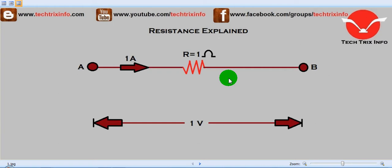...with the atoms or molecules of the substance. This collision creates the resistance and results in the liberation of a minute quantity of heat. The unit of resistance is ohms, and this can be simply explained with this figure.